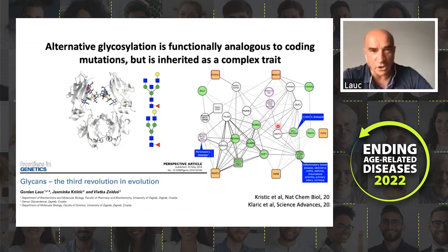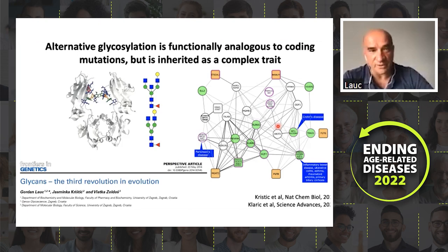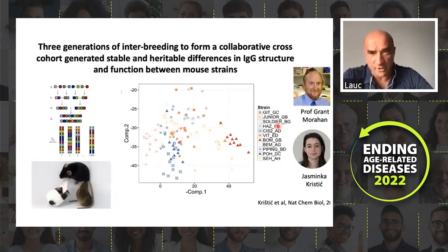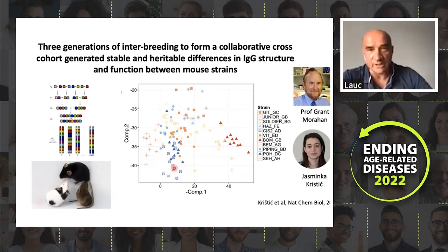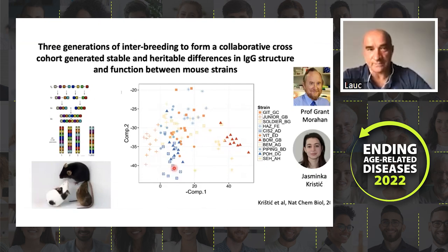Nearly a decade ago, we speculated that glycosylation represents the third revolution in evolution after the appearance of nucleic acids and proteins. And a couple of years ago, in a Nature Chemical Biology paper, we showed pretty decent evidence that by reshuffling allelic variants over only three generations, we can generate mouse strains which are completely different without a single mutation — just by reshuffling the allelic variants. So glycosylation gives another layer of complexity to biology.